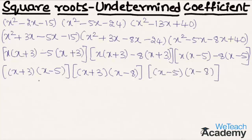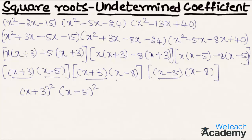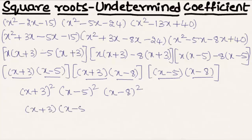Multiplying (x + 3)(x + 3) gives (x + 3)², multiplying (x - 5)(x - 5) gives (x - 5)², and multiplying (x - 8)(x - 8) gives (x - 8)². So the square root of the given expression is (x + 3)(x - 5)(x - 8).